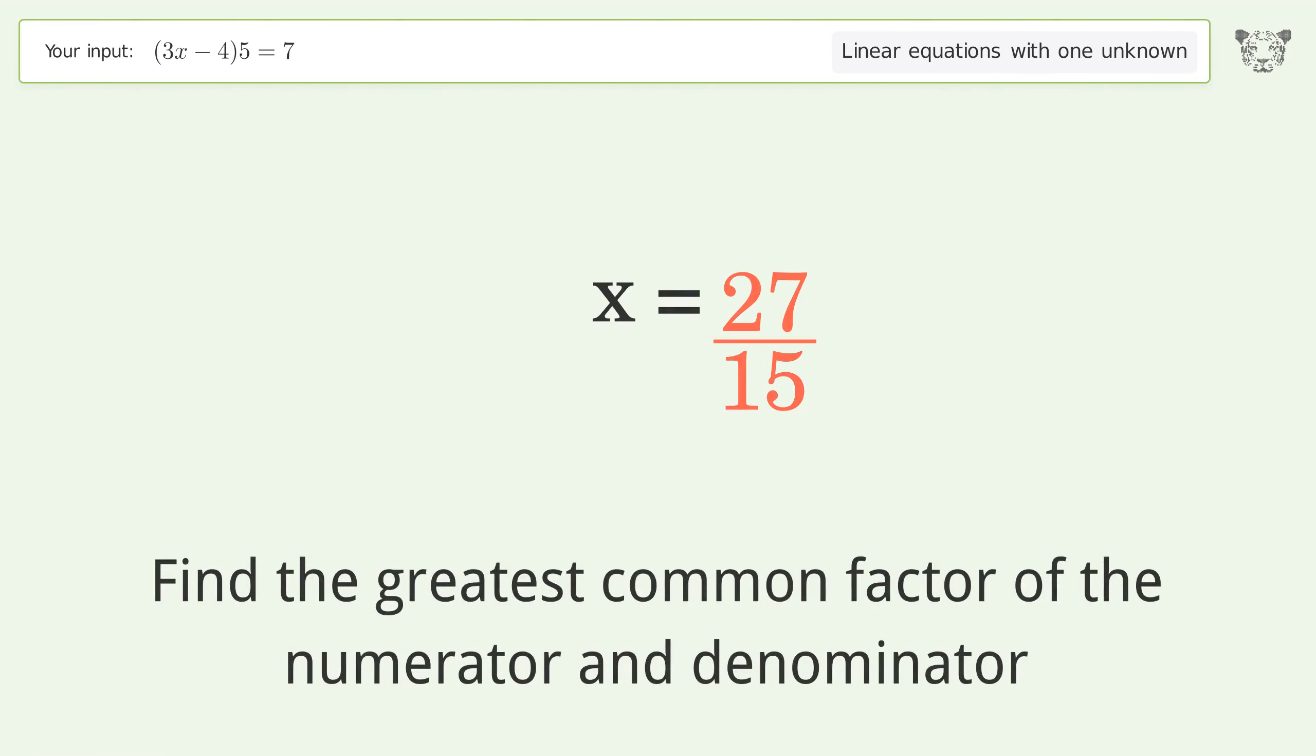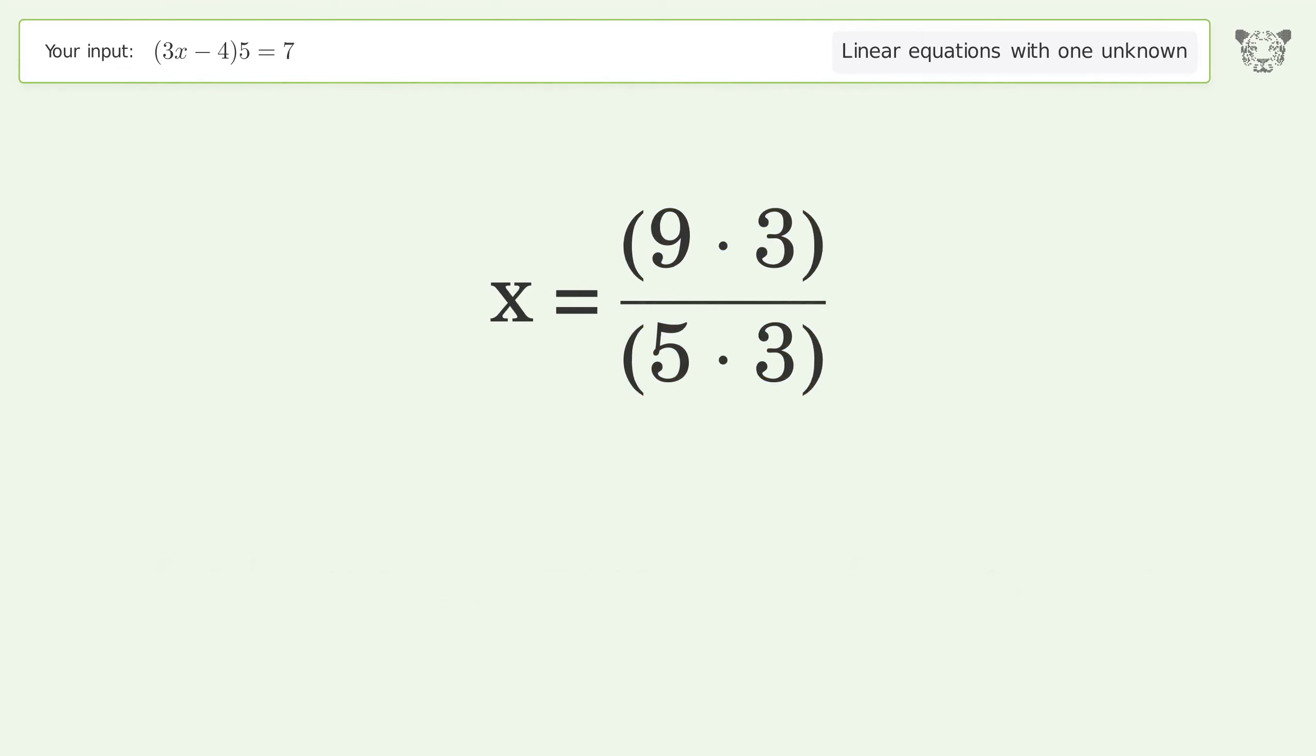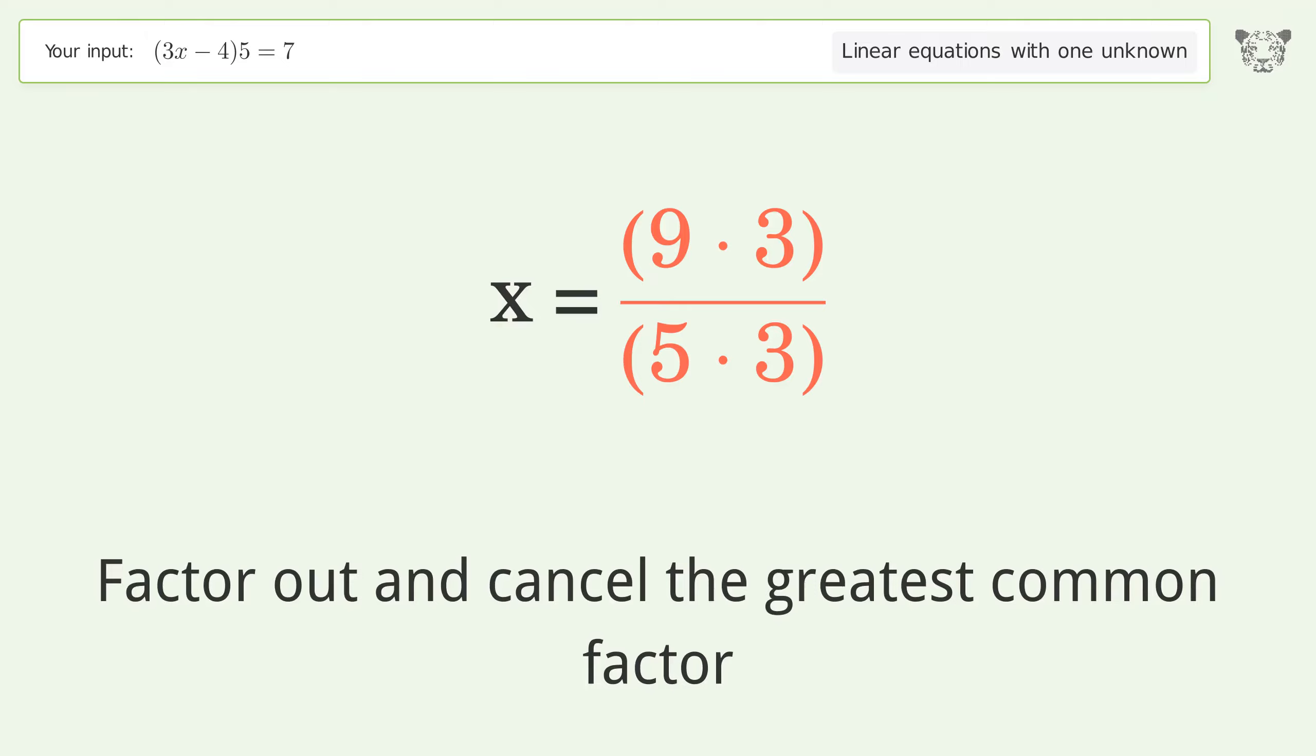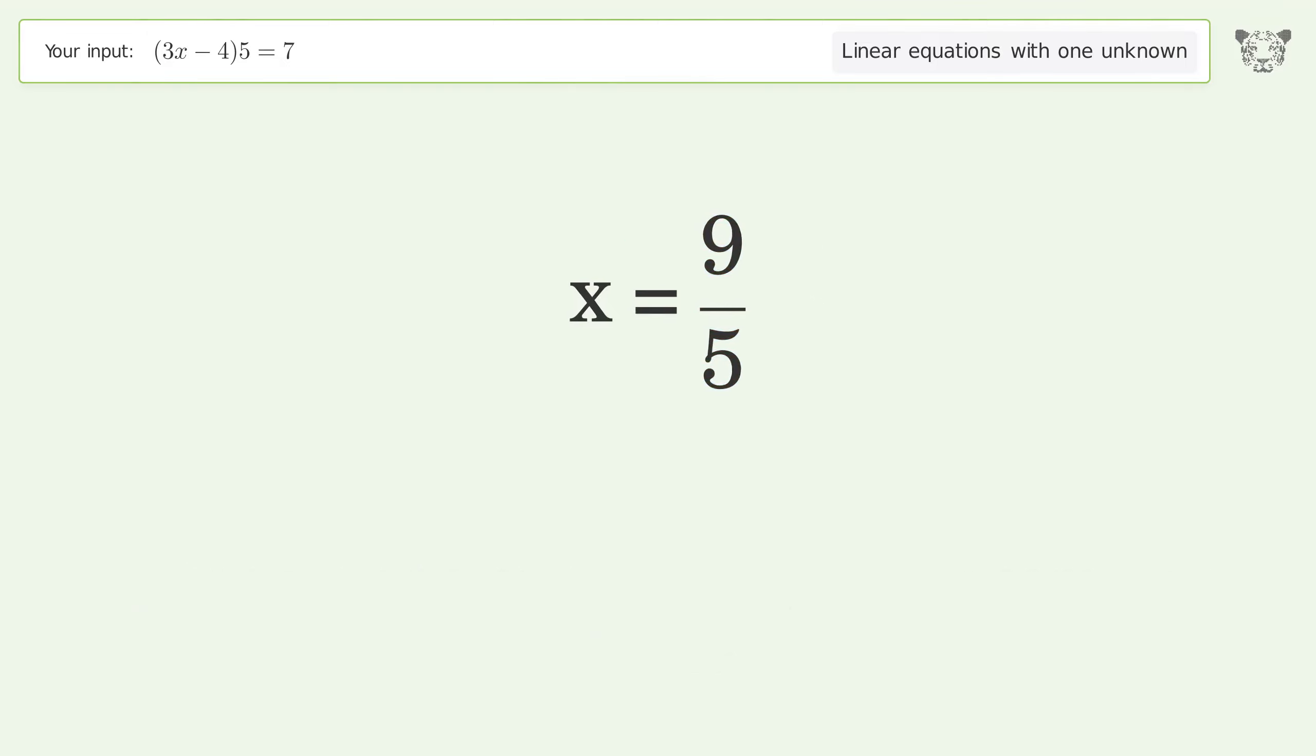Simplify the fraction. Find the greatest common factor of the numerator and denominator. Factor out and cancel the greatest common factor.